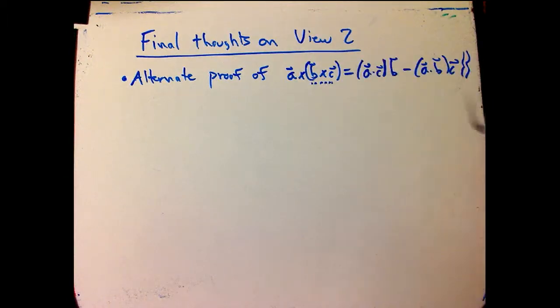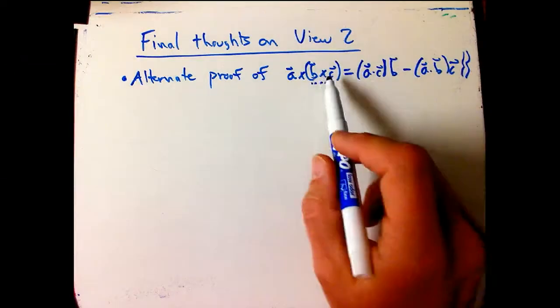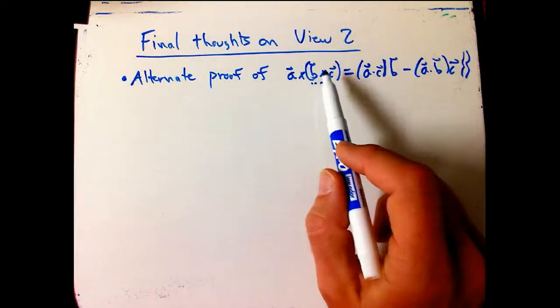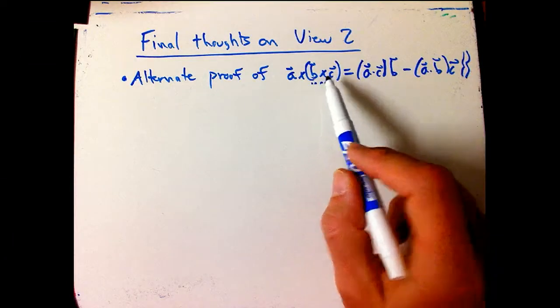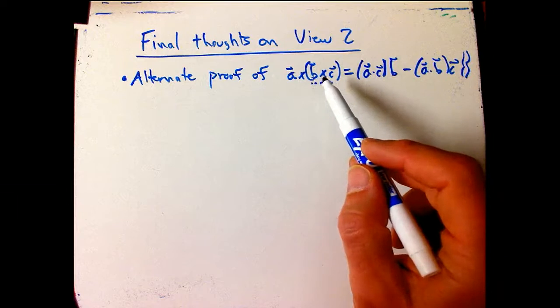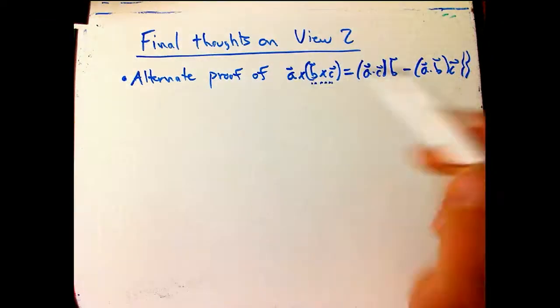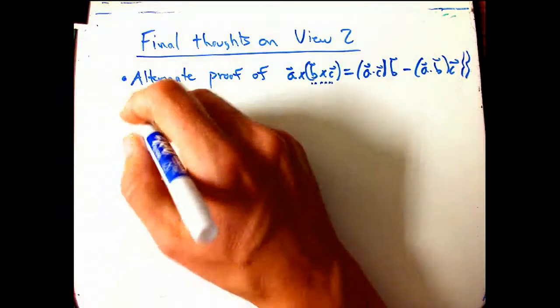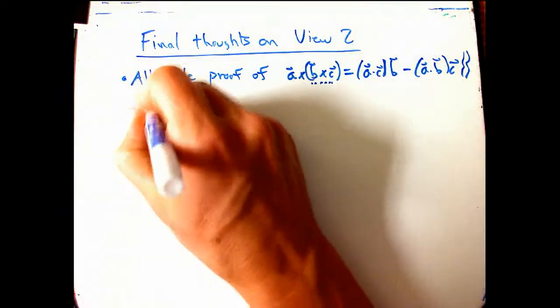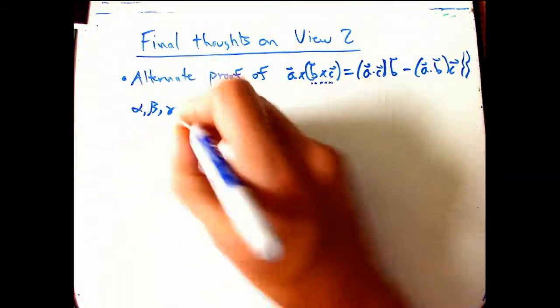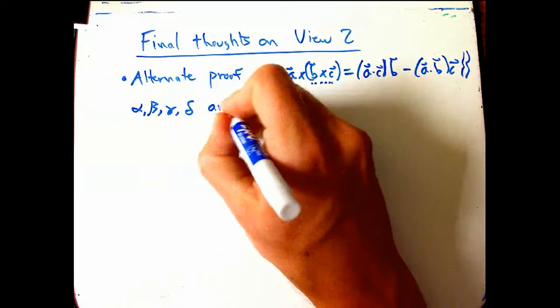I want to just think about, and also one thing I've been talking about is the cross product, in order to get it back to be a vector, you have to have some notion of the dot product. Well, what if we just take those two things, two forms and dot product, and take them pretty seriously? Let's say alpha, beta, gamma, and delta are one forms.